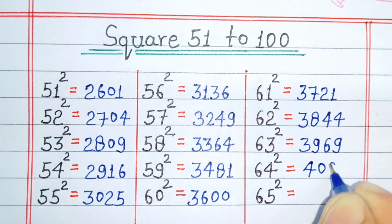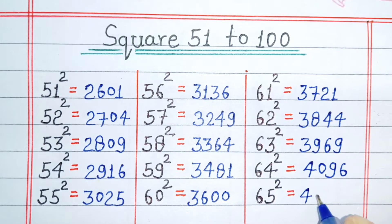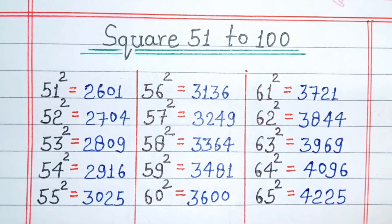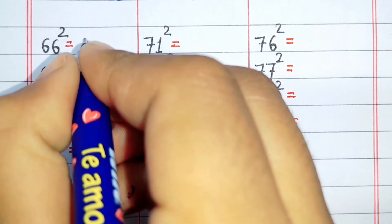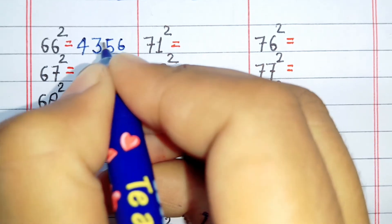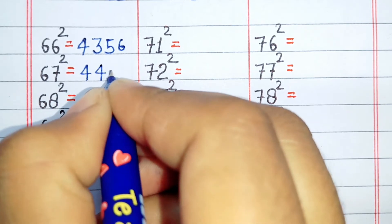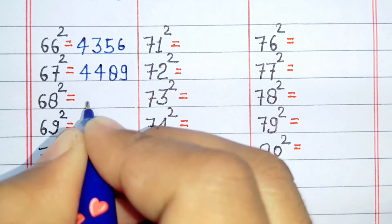Square of 64 is 4096. Square of 65 is 4225. Square of 66 is 4356. Square of 67 is 4489.